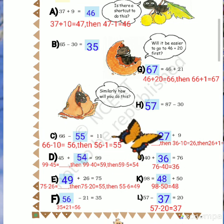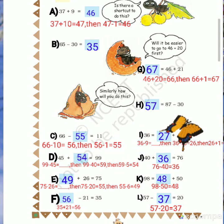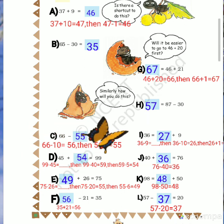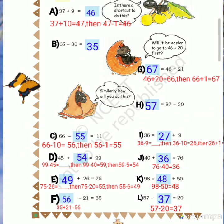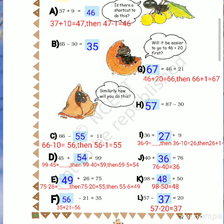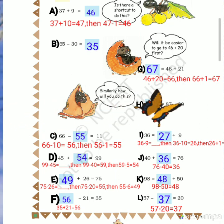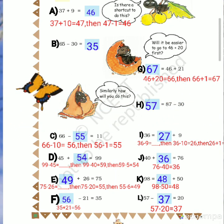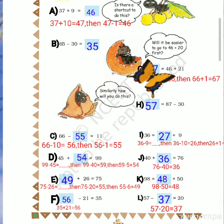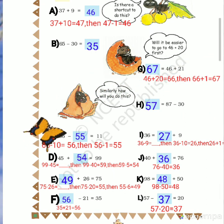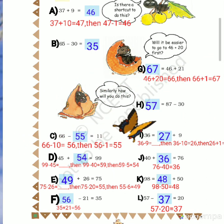Now look at I: 36 equals dash plus 9. How much do you add to 9 to get 36? Subtract 9 from 36. For the shortcut, first do 36 minus 10, but since you needed to subtract only 9, add one more to the answer. You will get the answer.